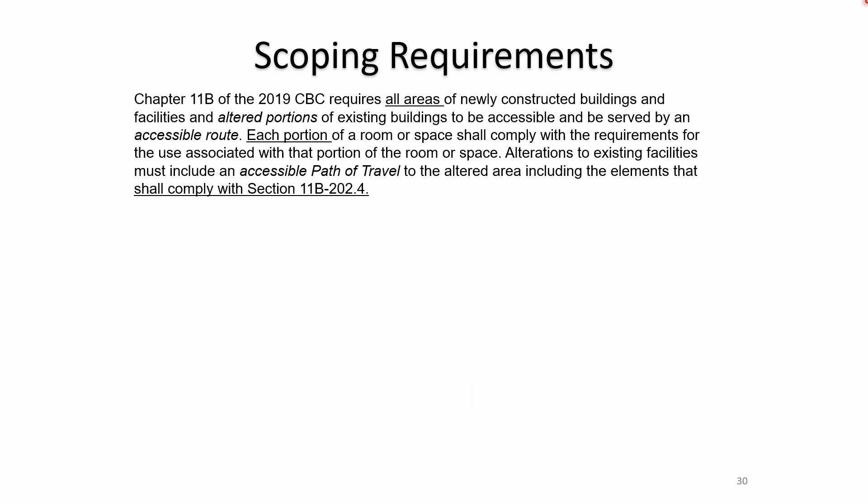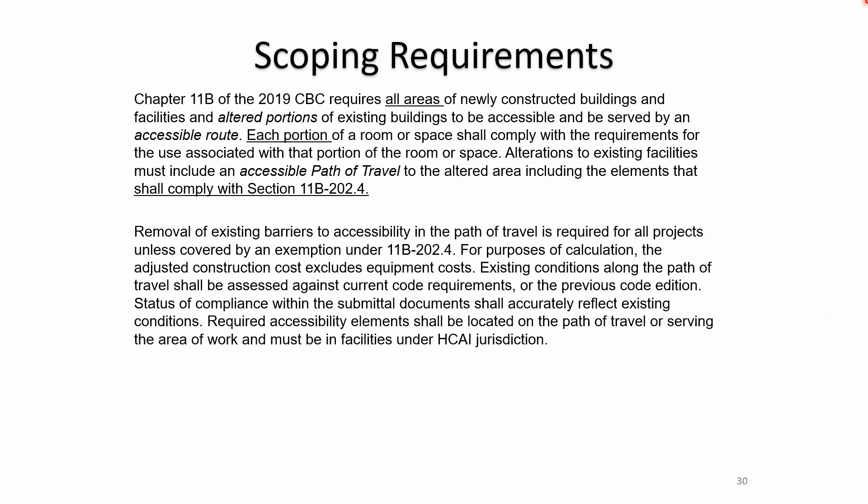The CBC requires all areas of newly constructed buildings and altered portions of existing buildings to be accessible and be served by an accessible route. Each portion of a room or space shall comply with the requirements for the use associated with that portion. The removal of existing barriers to accessibility in the path of travel is required for all projects unless covered by an exemption. The existing conditions along the path of travel shall be assessed against current code requirements or the previous code edition — going back to 2016.